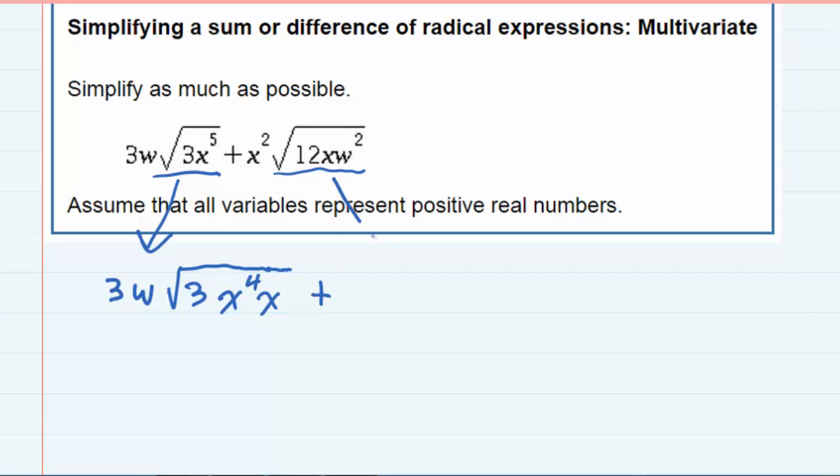And the other one over here, I've got an x squared on the outside. Now, underneath, it's got 12, but I can rewrite 12 as 4 times 3. And then I'll be able to pull the 4 out, because it's a perfect square. I'm just going to write the xw^2. The w^2 is already an even exponent, so I'll be able to pull that out as well. So let's simplify these.